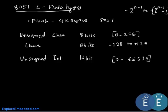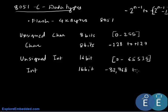Similarly, we have signed int, or simply int. It is also 16 bits and its range is minus 32768 to 32767. These are the four basic data types used when programming in C for the 8051, similar to generic C programming.